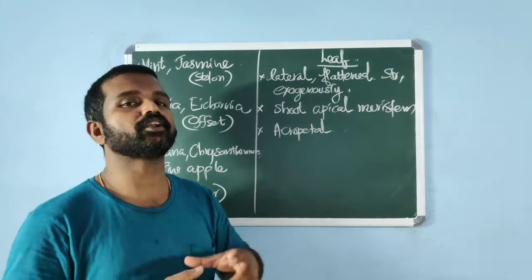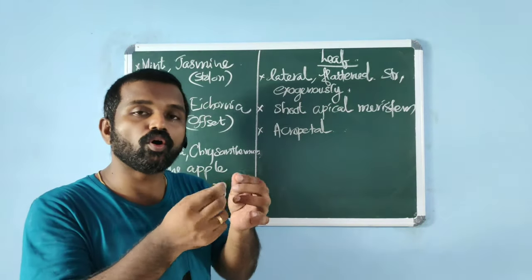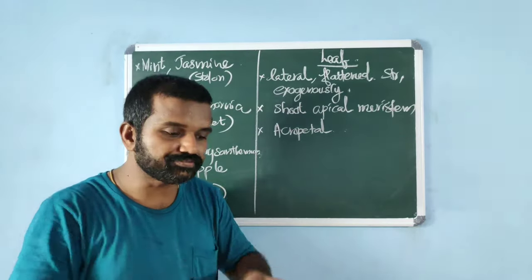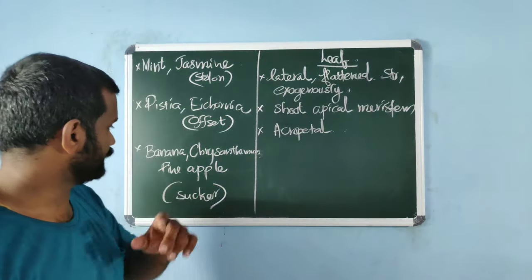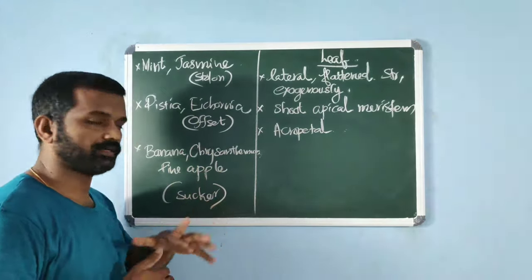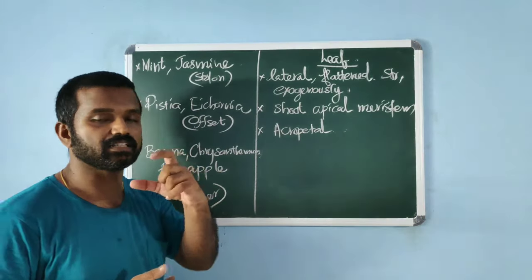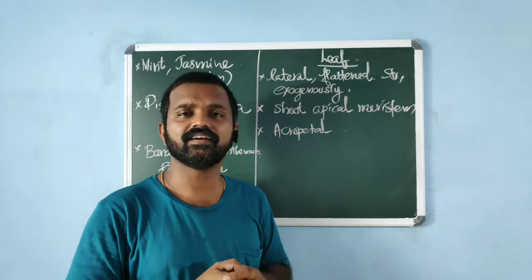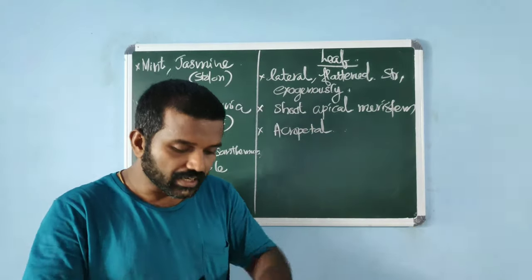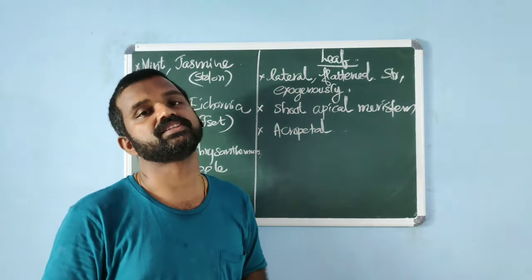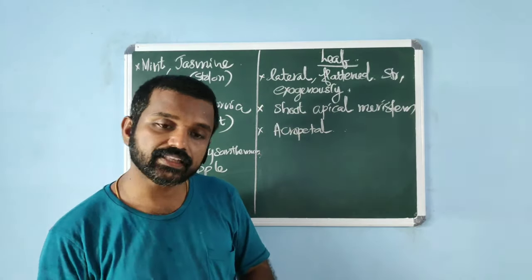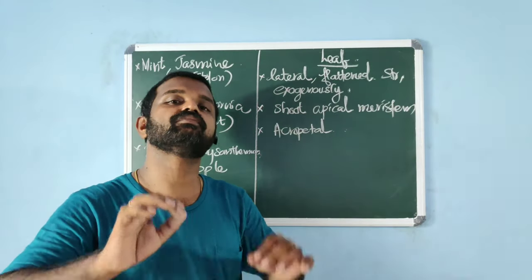In Eichhornia, the modification is offsets — short and thick internodes with a rosette of leaves and tuft of roots at the node. In banana, chrysanthemum, and pineapple, the modification is a sucker, where it arises from the underground part of the main stem, grows beneath the soil horizontally, then turns upward to form new plants.